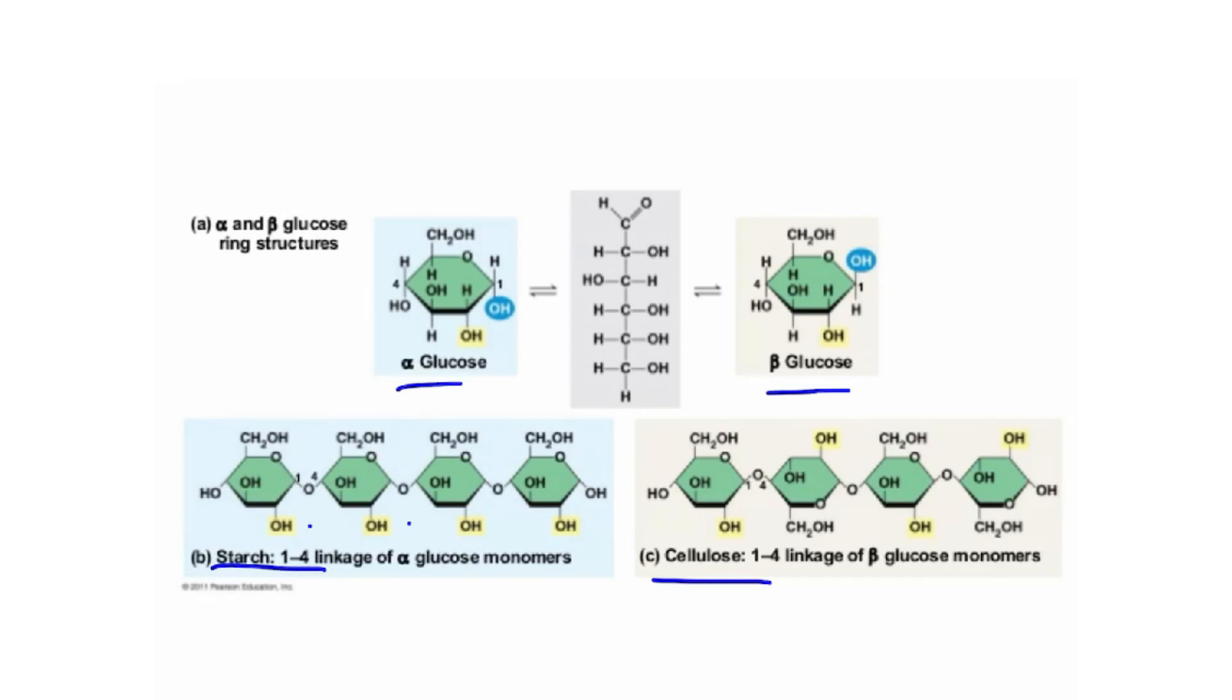This means that in starch, hydroxyl groups are branched, whereas in cellulose, they are unbranched.